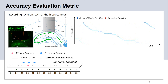Before introducing the proposed method, I'll provide more information about the decoding task. A rat ran back and forth on a 250 cm linear track, while we captured calcium images at the CA1 region of the hippocampus of the brain. From left to right and from right to left, we divide the linear track into evenly distributed position bins and label each bin with a digit number. The decoding task is to infer which position bin the rat is at from the calcium image. The figure on the top shows a demonstration of such decoding while the rat is running on the linear track.